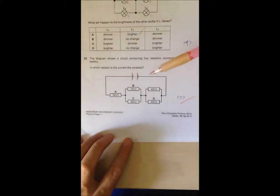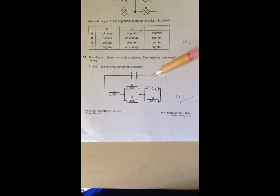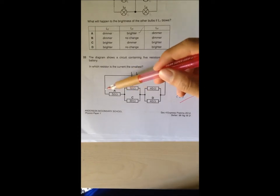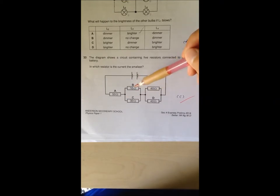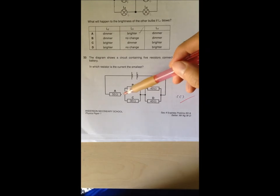Question 33, you don't really need to calculate anything, you just need to have this concept that when current splits into two or more paths, the path with the least resistance will receive the highest current and the path with the highest resistance will have the smallest current. If you look here there's only one path so current will not be small here, then after they split. This path offers lower resistance so most of the current will go to 10 ohm. Very little current is going into 30.